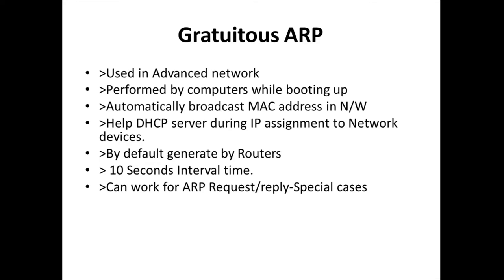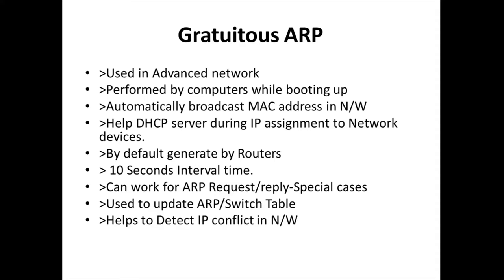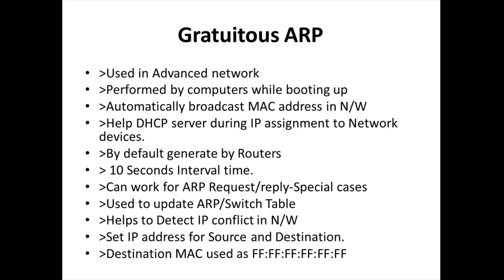In some special cases, gratuitous ARP can work for both ARP request and ARP reply. It is also used to update the ARP table or the switch table in the network. Gratuitous ARP also helps detect IP conflicts — that is, when two computers on the same network have the same IP address. In the gratuitous ARP packet, the source and destination IP addresses are already set up, and if there is no MAC address for the destination, it uses the broadcast MAC address of FF:FF:FF:FF:FF:FF.